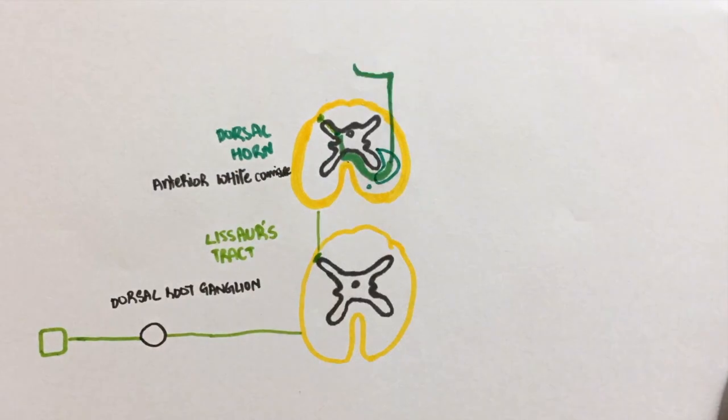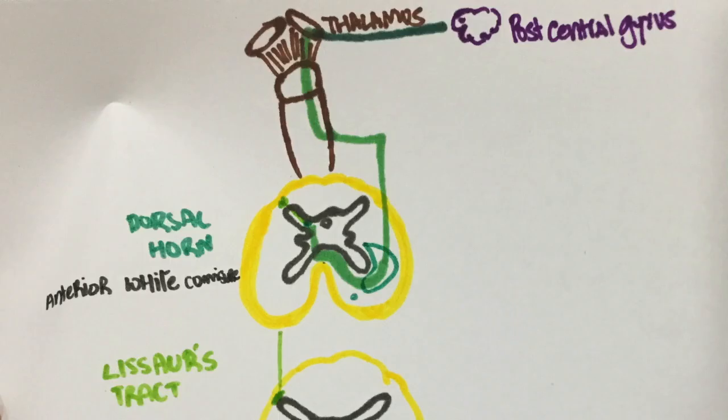From here, they travel up to the brain stem and go straight to the thalamus. From the thalamus, they reach the primary sensory cortex, which is the postcentral gyrus.